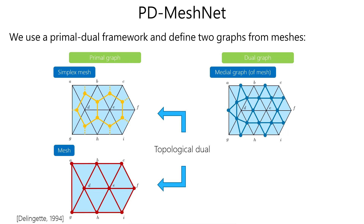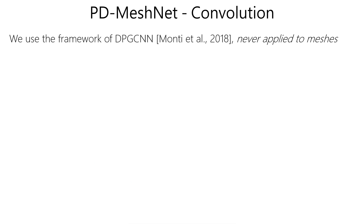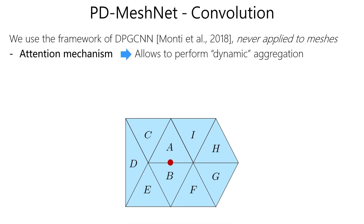And a primal graph, which is the topological dual of the mesh and has nodes on its faces. We implement convolution using the generic framework of DPGCNN, which we are the first to extend to meshes.